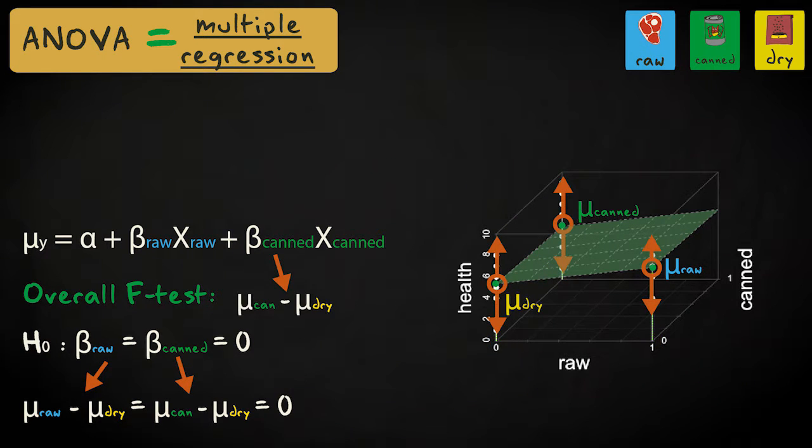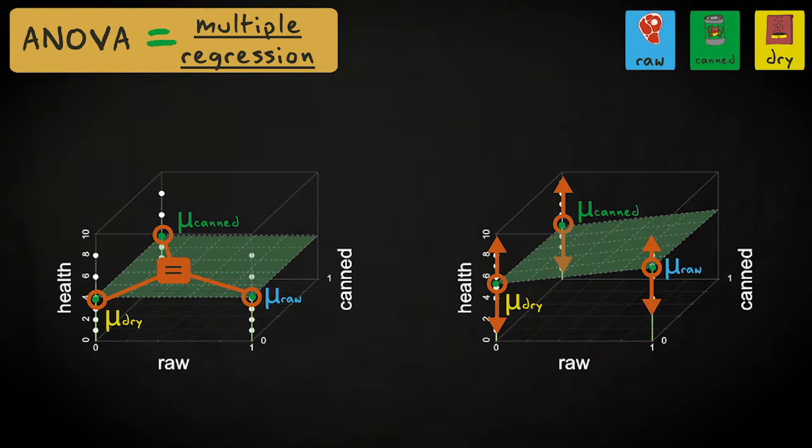The observations are scattered around these means. In multiple regression, the null hypothesis corresponds to a flat plane, where the means are all the same, resulting in regression coefficients of zero. As soon as one or more means differ from the rest, the plane will be tilted.